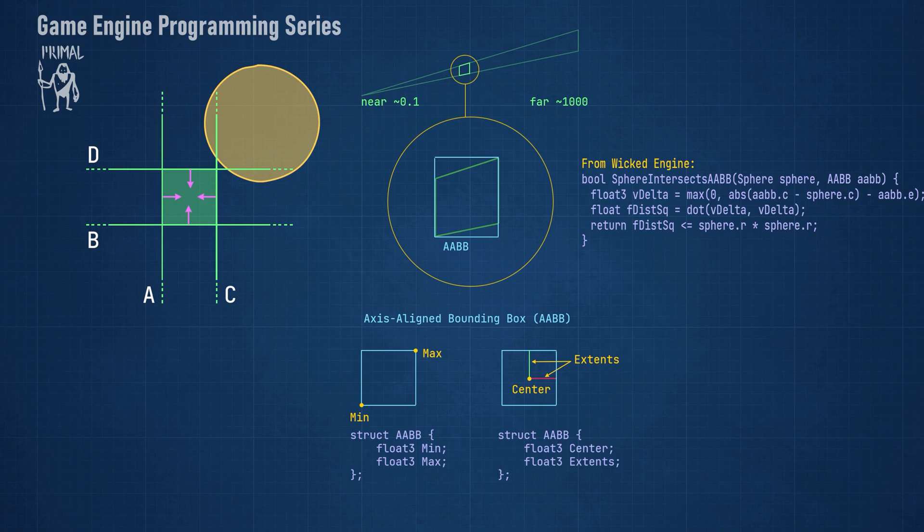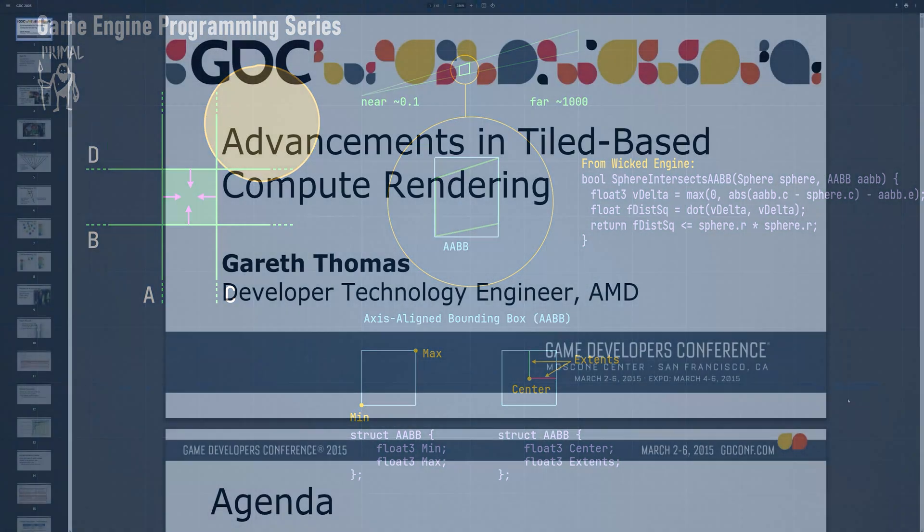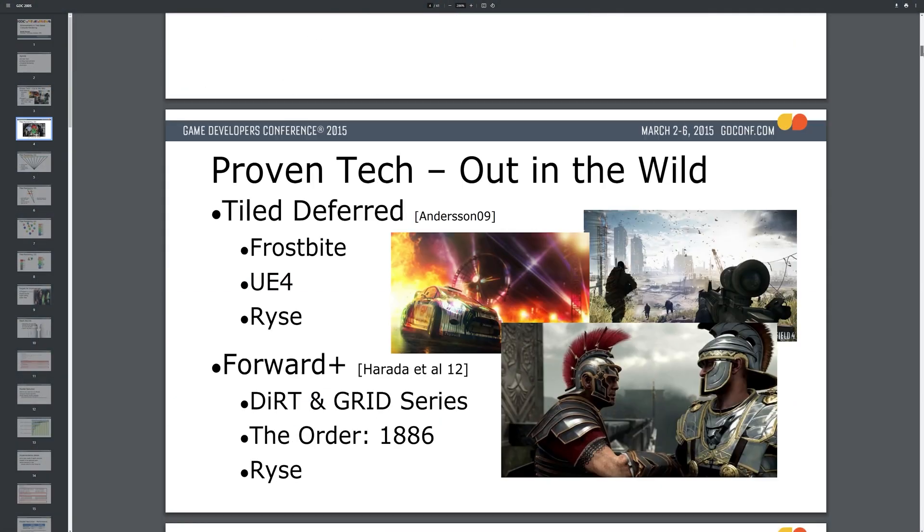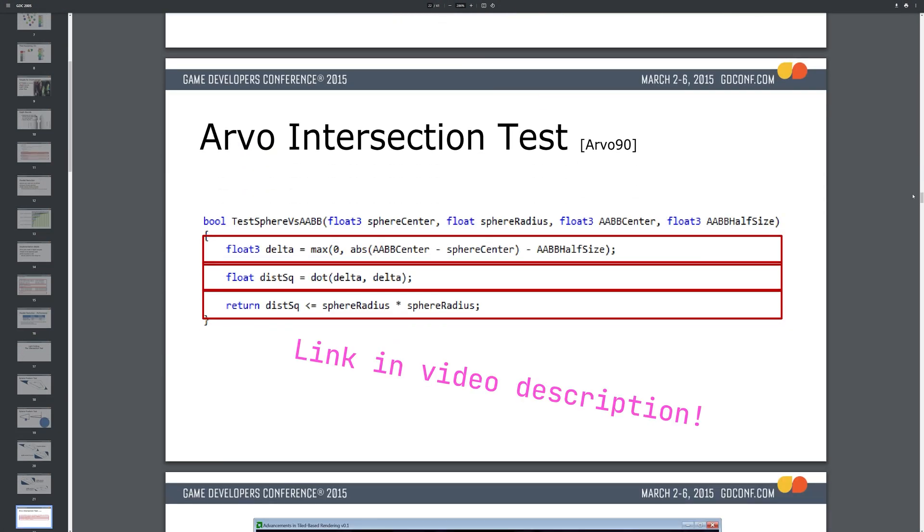The code shown here is from WickedEngine. The intersection method originates from this presentation by Gareth Thomas, where we find the same code. The intersection method appears to have been invented more than 30 years ago by someone called Arvo.